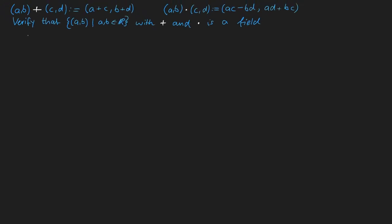In this exercise we need to verify that the pair (A,B) with the given definition of addition and multiplication is a field. To do this we need to show all 9 field axioms.